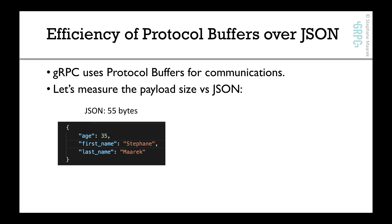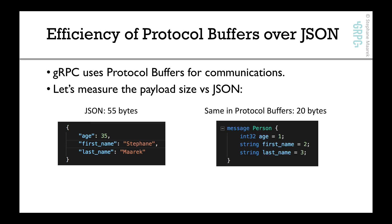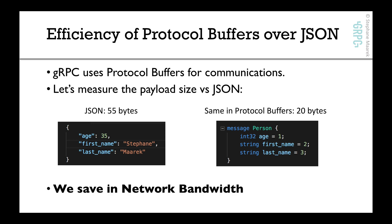Still really small, but look at it. If we define the same person in protocol buffers — our message person has age as tag 1 for int32, then string first name and string last name for tags 2 and 3 — if I encoded this and produced the exact same message with my first name, last name, and age, I get 20 bytes. You can see right away that with protocol buffers versus JSON, we save a lot of bandwidth because the messages are smaller. So already, using protocol buffers, we'll save on network bandwidth.